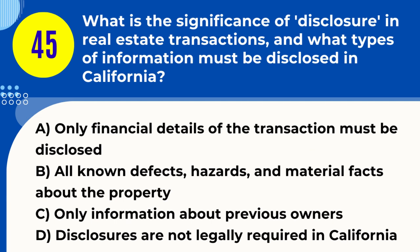Question 45. What is the significance of disclosure in real estate transactions, and what types of information must be disclosed in California? A. Only financial details of the transaction must be disclosed. B. All known defects, hazards, and material facts about the property. C. Only information about previous owners. D. Disclosures are not legally required in California. Answer: B. Explanation. In California real estate transactions, disclosure is significant as sellers are legally required to disclose all known defects, hazards, and material facts about the property. This includes issues like structural defects, pest infestations, and history of property disputes.